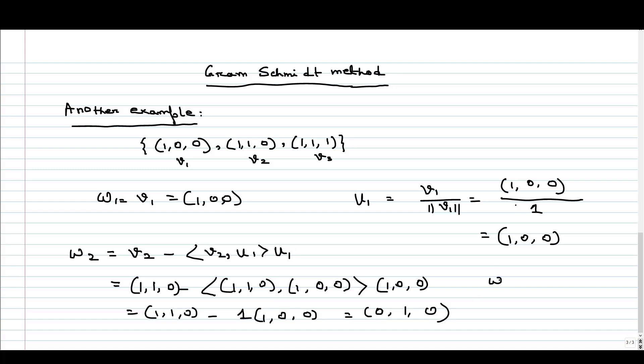Now what is our U2? U2 is W2 divided by its norm. The norm of W2, as you can see, this is the standard basis vector (0, 1, 0).